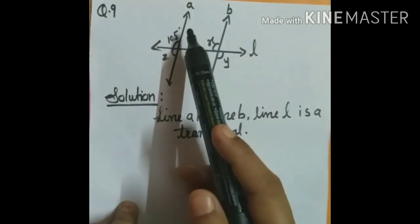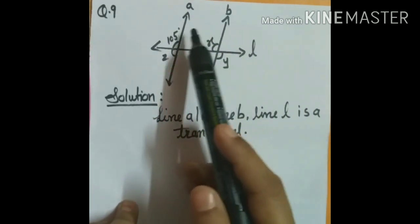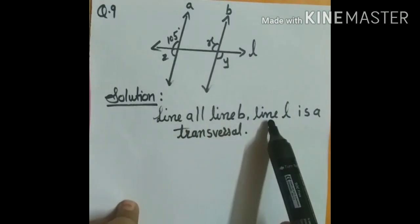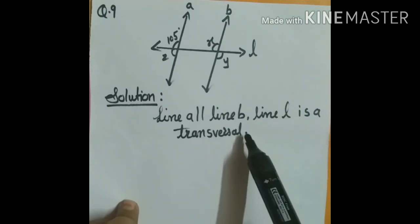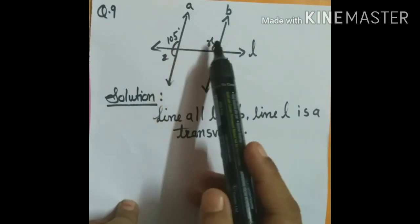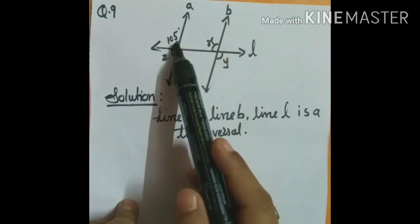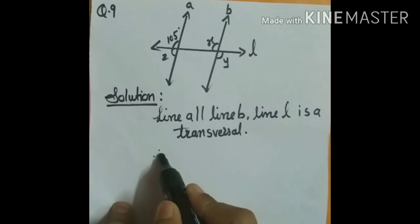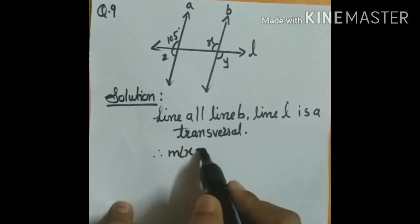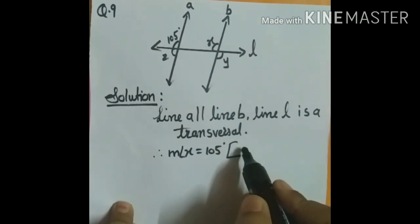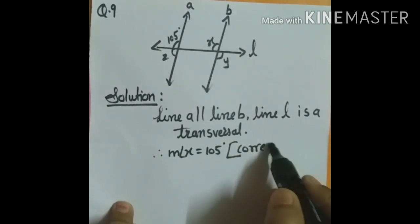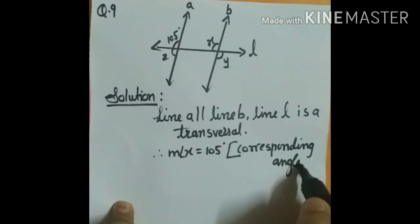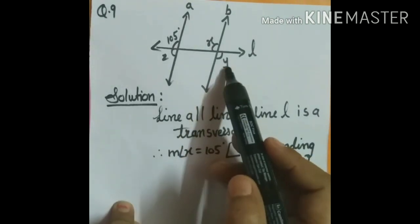Question number 9: Lines A and B are parallel lines and line L is a transversal. These two angles are corresponding angles. This angle is 105 degrees, so the other angle will also be 105 degrees. Therefore angle X equals 105, because these two angles are corresponding angles.